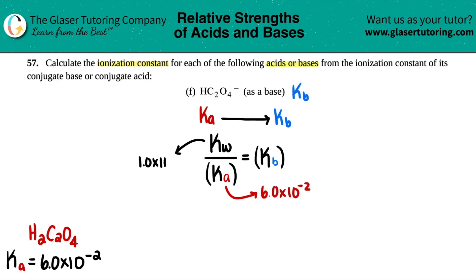which is 1.0 times 10 to the negative 14th. So let's go for it. Something divided by something else equals Kb.